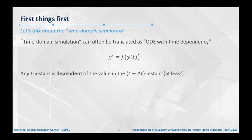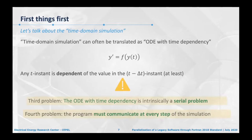Let's talk about time domain simulation. The sentence can often be translated as an ODE with time dependence, so anything computed will depend on the values of past values. This creates a problem: ODEs with time dependence are inherently serial, because I cannot solve several points on my timeline simultaneously — I must proceed serially. Furthermore, the program must communicate at every step of simulation, so I rely on communication a lot. I can't break into large parts where every thread solves larger sets; I have to return values at a certain frequency.